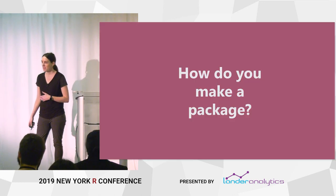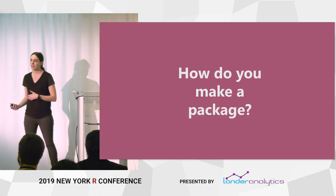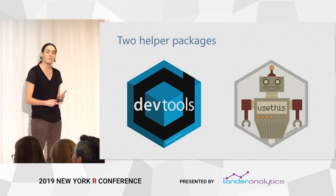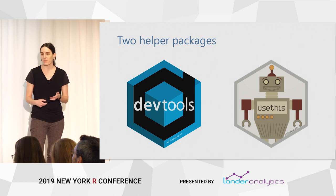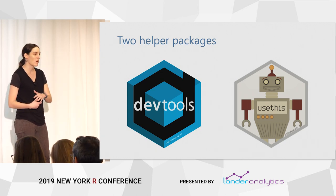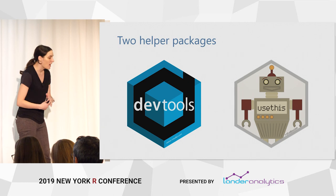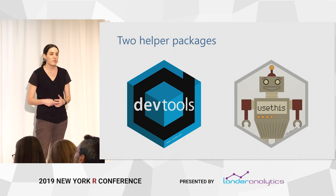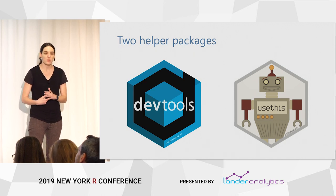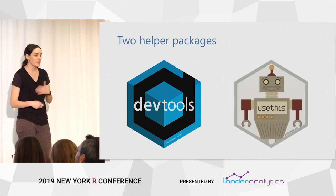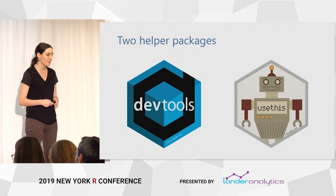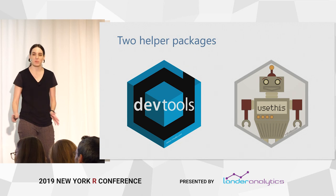So how do you make a package? There are two really great tools that can help you: DevTools and UseThis. Many of you might be familiar with DevTools, even if you've never made a package — it's how you can install a package from GitHub, for example. It's been around for a while and was developed primarily around making writing packages easier. But there's a really cool new package called UseThis which, among other things, takes some parts of DevTools but also adds new functionality around writing packages. And it's basically completely magic.